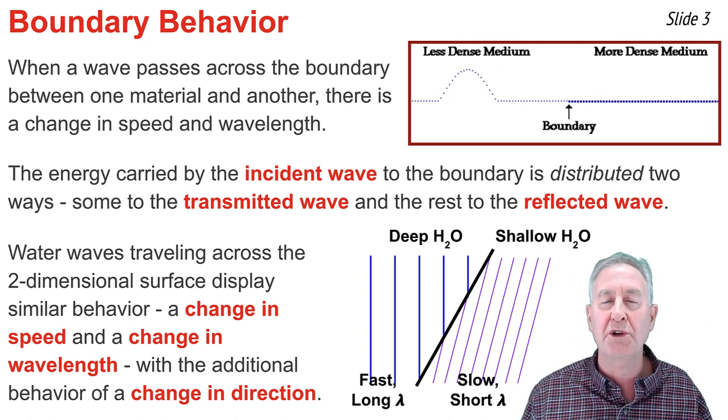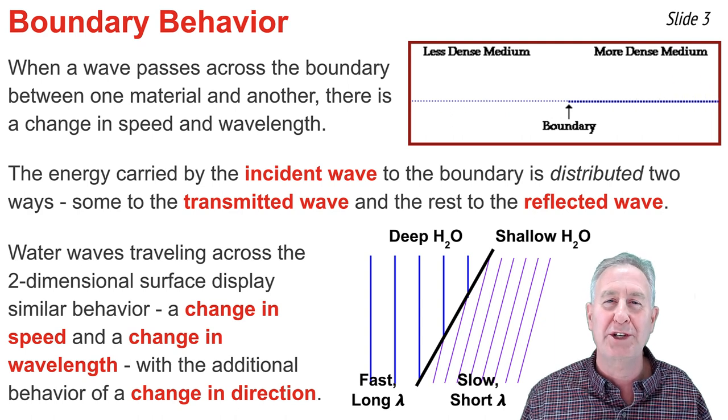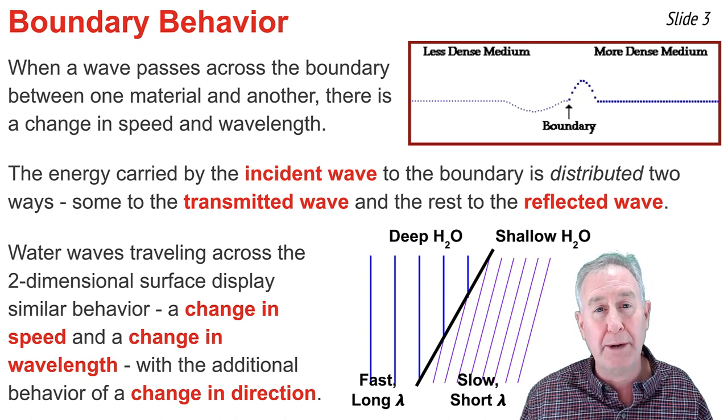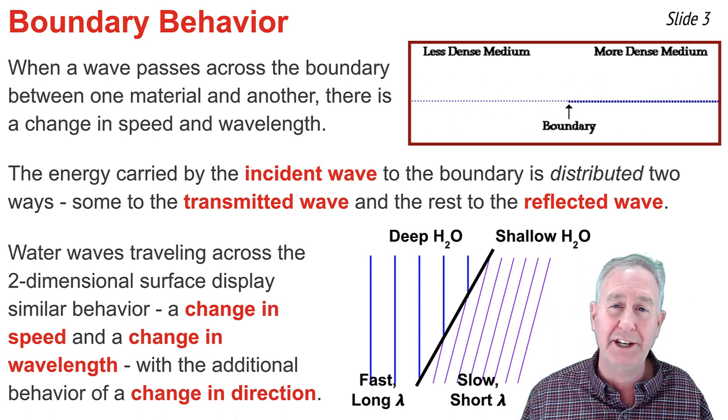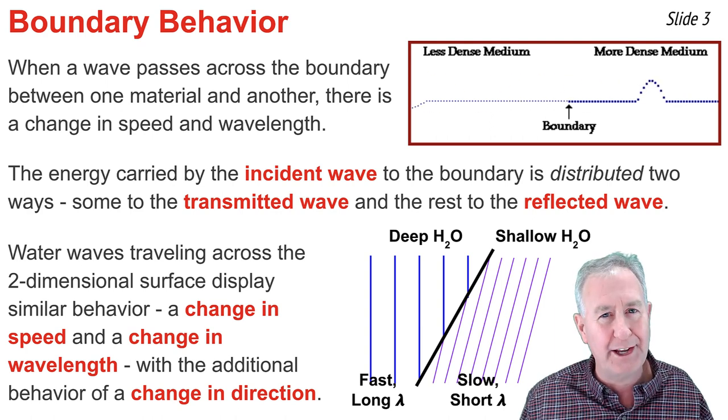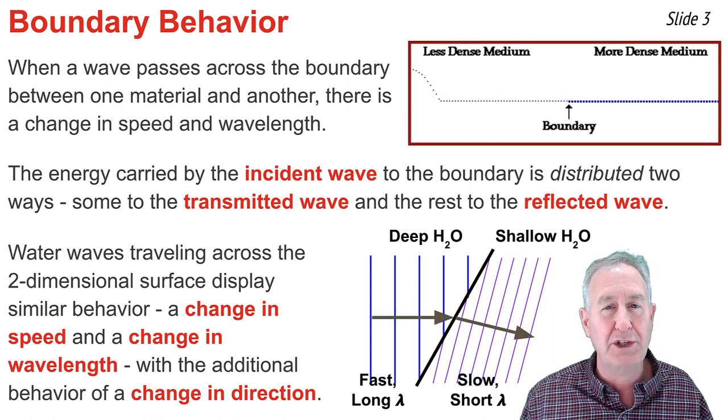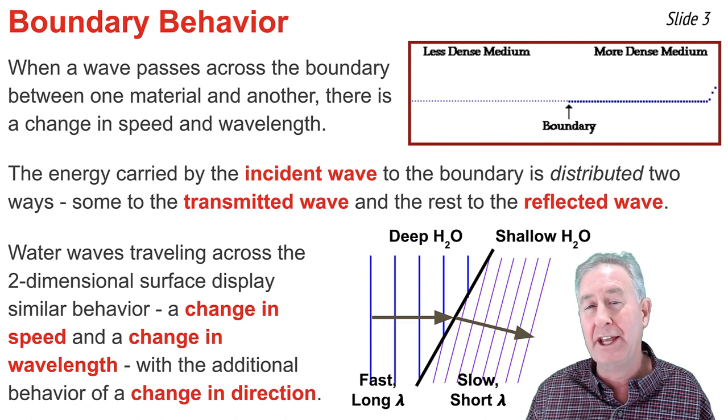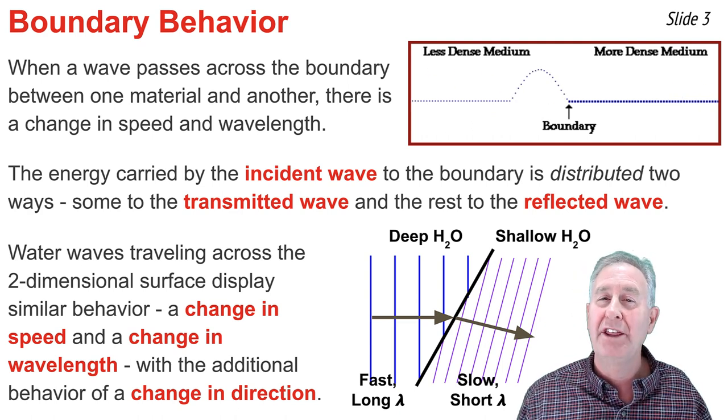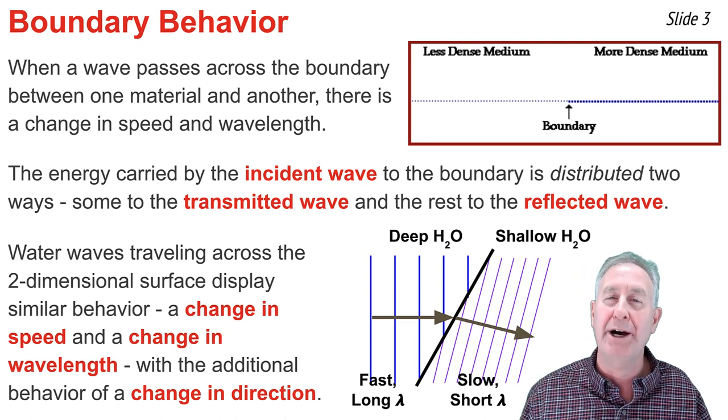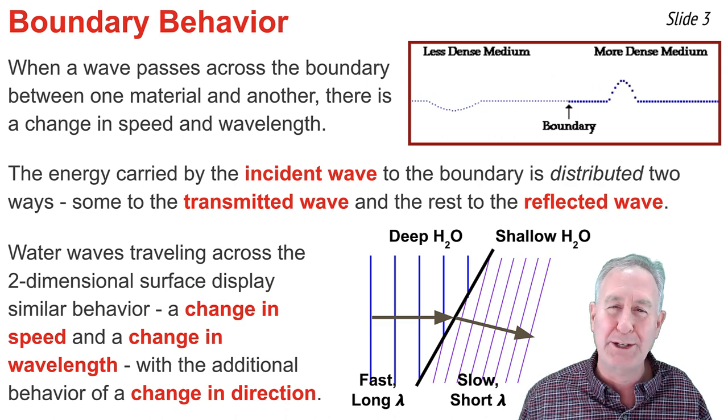But there's an additional feature to observe here in the two-dimensional situation. The water waves are approaching the boundary at an angle other than 90 degrees, other than head-on. And because of that, there's a change in direction, as represented by the arrow shown here on the diagram. This change in direction of a wave at a boundary is what we refer to as refraction.